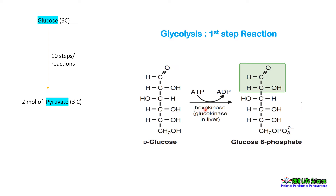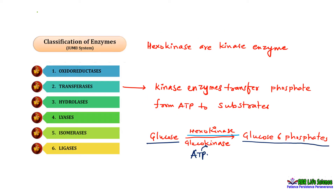So why we are writing two enzymes in this reaction, we will discuss this shortly. Enzymes are generally classified into six classes. Hexokinase and glucokinase are kinase enzymes belonging to the class transferases.